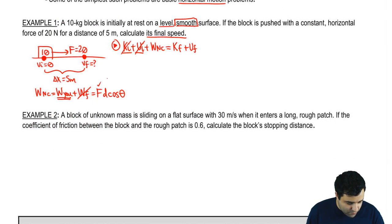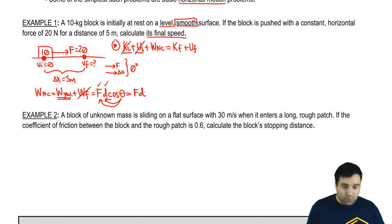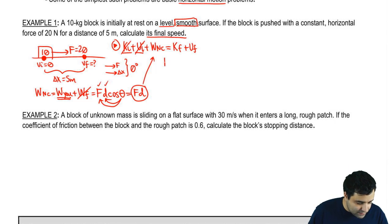The work done by U is F d cosine of theta. We know the force is 20, the distance is 5. Theta is the angle between the displacement and the force. In this case, we're pushing to the right horizontally, and the object moves to the right. So the angle between these two is zero. The cosine of zero is simply one, so this becomes F d. When the force is parallel to the displacement, the work simplifies to F d. And that's what's going to go right here as the work done by non-conservative forces.